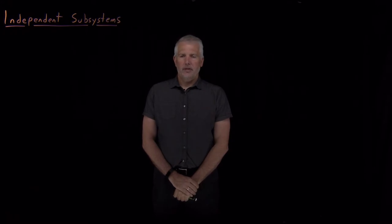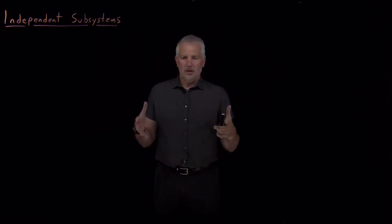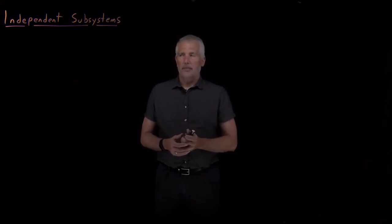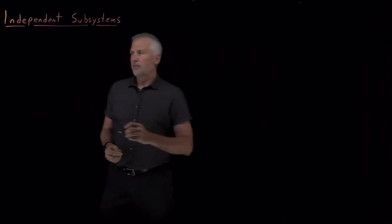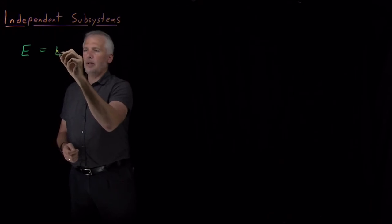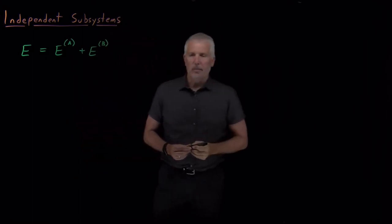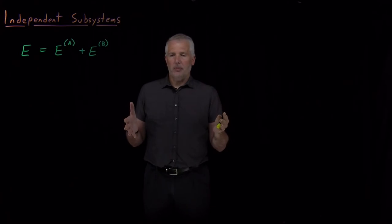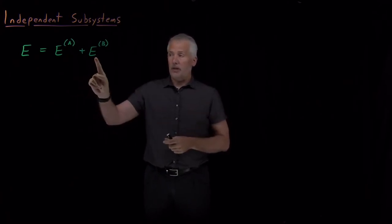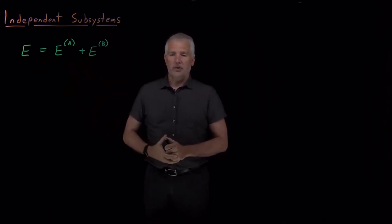If we can write down all the energies that a system has, we can use those to calculate the partition function, which is the sum of all the Boltzmann factors for the system. That calculation is made a lot easier in a pretty common case: when we have one large system composed of multiple smaller parts or multiple independent subsystems. Suppose we have a system whose total energy can be written as the sum of the energy of some part A and some part B. We might have a box with two molecules in it — A is molecule 1, B is molecule 2 — so the energies of the two molecules sum together to give the energy of the whole system.